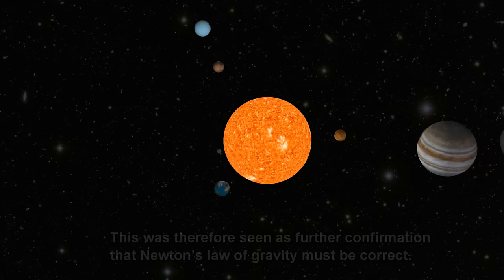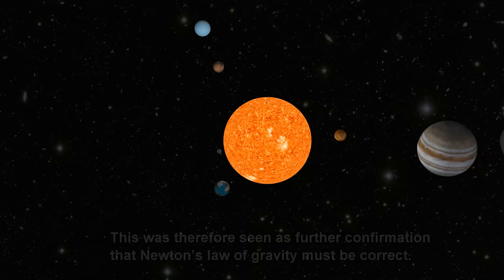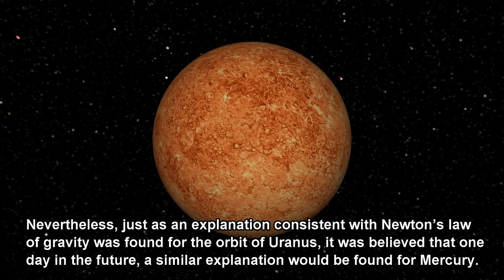This was therefore seen as further confirmation that Newton's law of gravity must be correct. But there was still the issue of Mercury. Just as an explanation consistent with Newton's law of gravity was found for the orbit of Uranus, it was believed that one day in the future, a similar explanation would be found for Mercury.